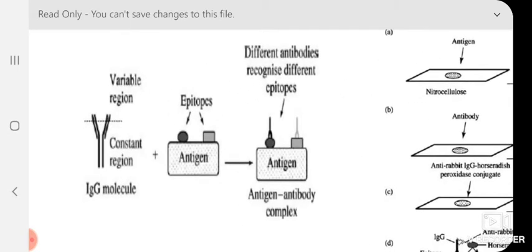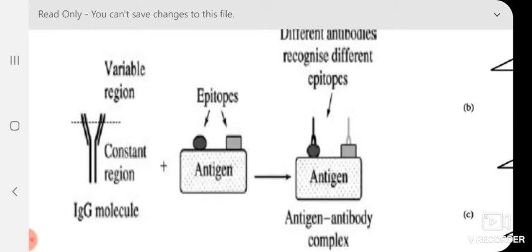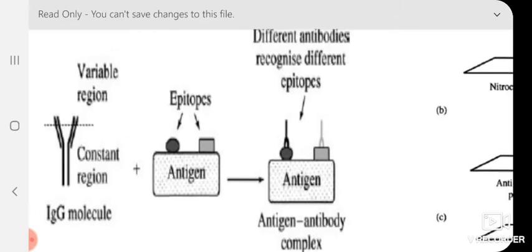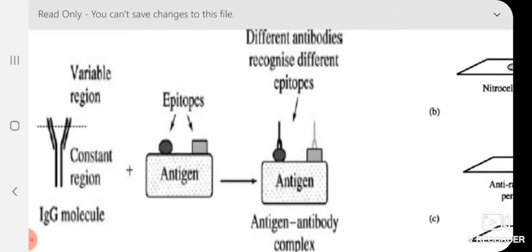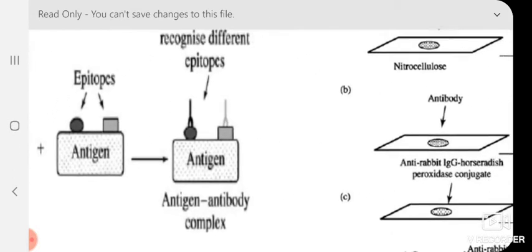This is a typical structure of IgG — this is an antibody molecule. The two arms of this Y-shaped antibody, as shown in the diagram, are the variable regions. The other part, the long part, we call the constant region, the Fc region. This is an antigen; after processing it displays many epitopes — these are the antigenic determinants. Different antibodies recognize different epitopes, and this is how the antigen-antibody reaction takes place.